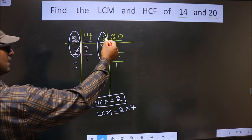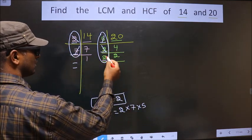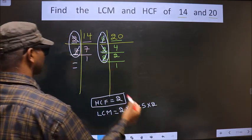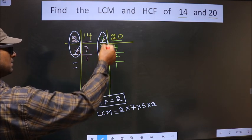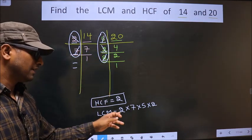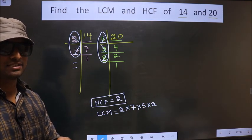Now over here 5 is not cut, so you cut 5 right here. Now 2 is not cut, so you cut 2 right here. Now each number has been cut. So now you multiply all these numbers. Whatever number you get, that is your LCM.